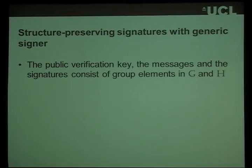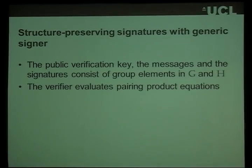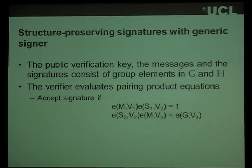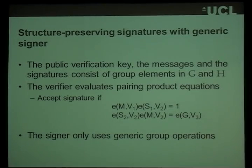A structure-preserving signature is defined as follows: everything has to be group elements living in the base groups. The public key consists of group elements in the base groups. The messages are group elements in the base groups. The signatures are group elements in the base groups. The verifier only needs to evaluate pairing product equations — equations where you take pairings of group elements, multiply them together, and check the result. Additionally, the signer only uses generic group operations: it can take group elements, multiply them, raise them to exponents, but does not look at the bit structure of a group element.